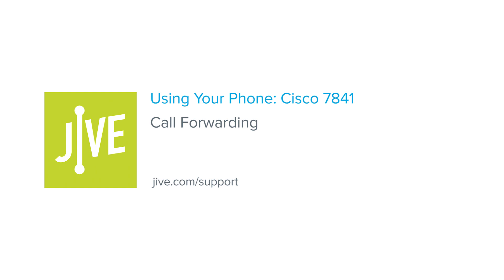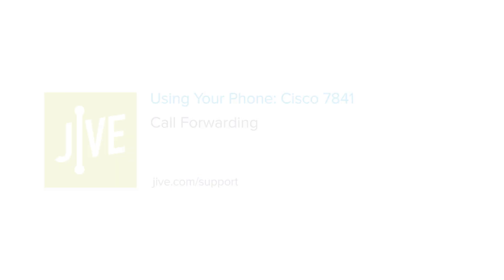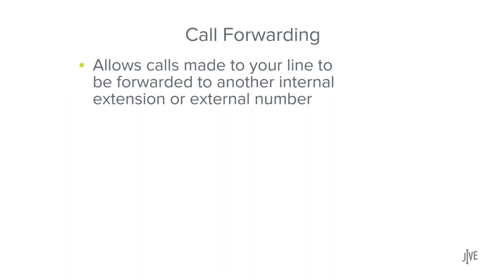In this video, you will learn how to enable and disable call forwarding on a Cisco 7841 phone. Call forwarding allows calls made to your line to be forwarded to another internal extension or external number.